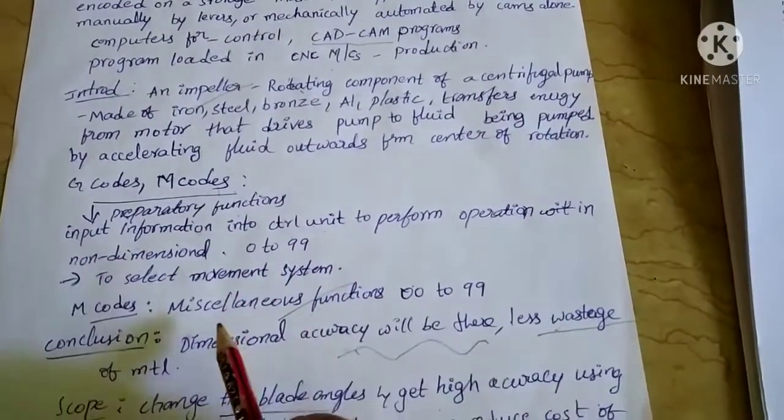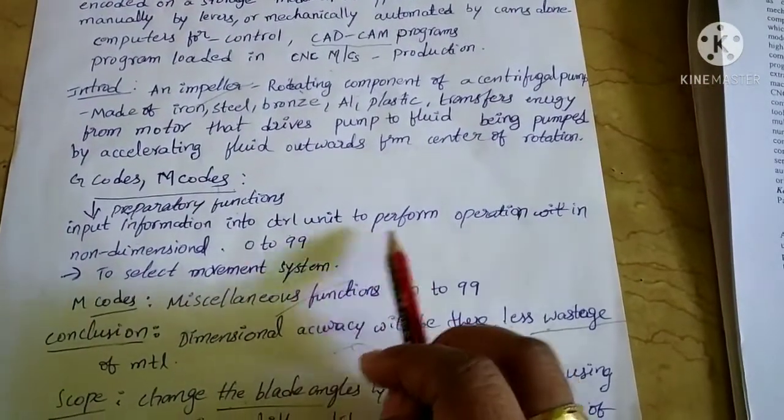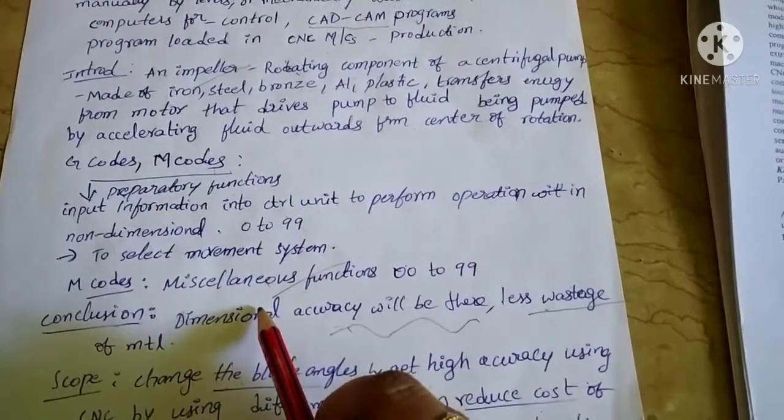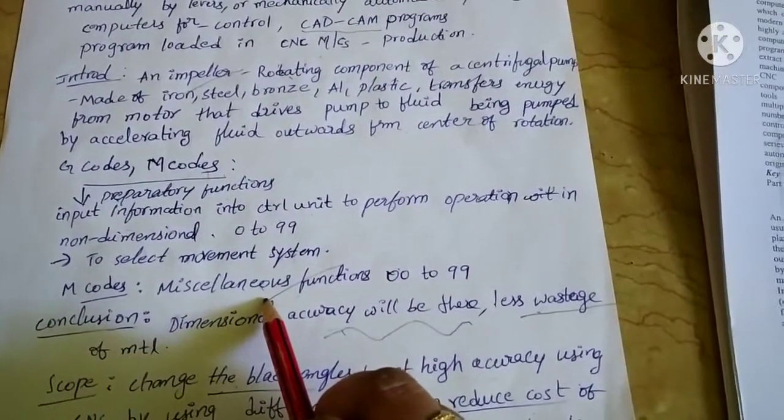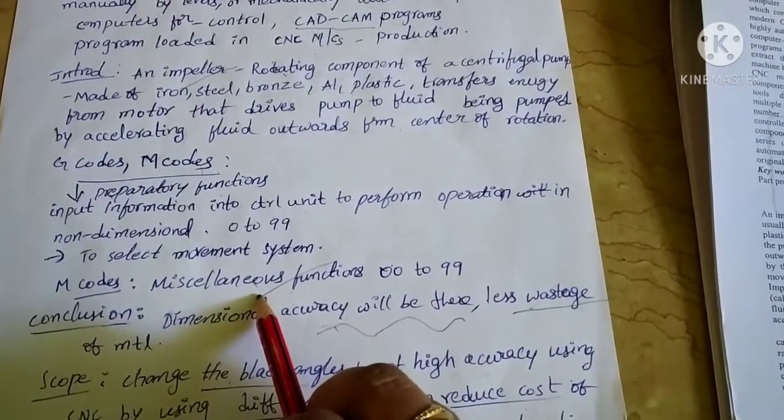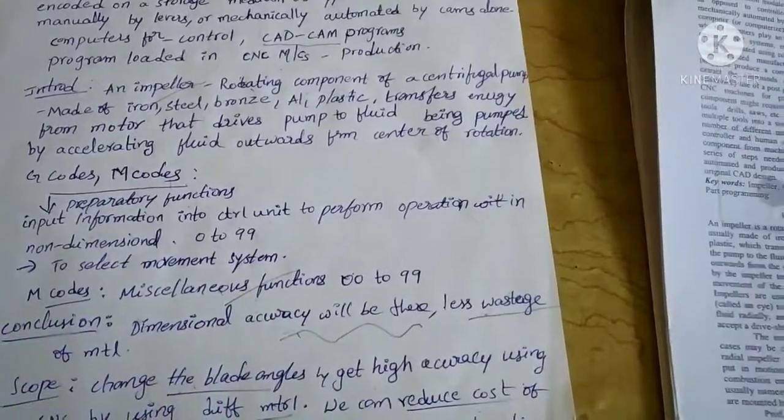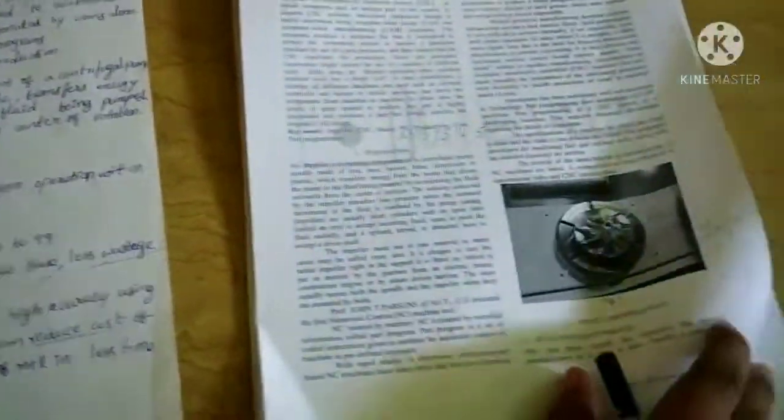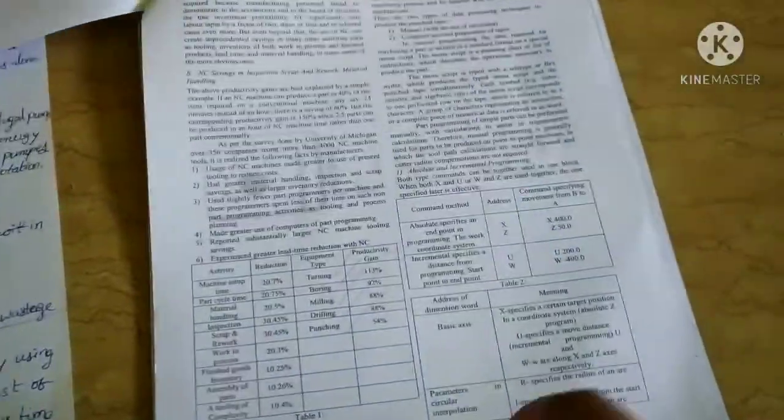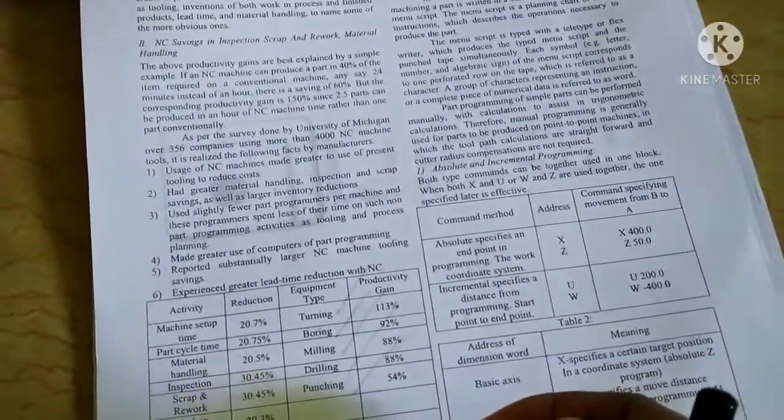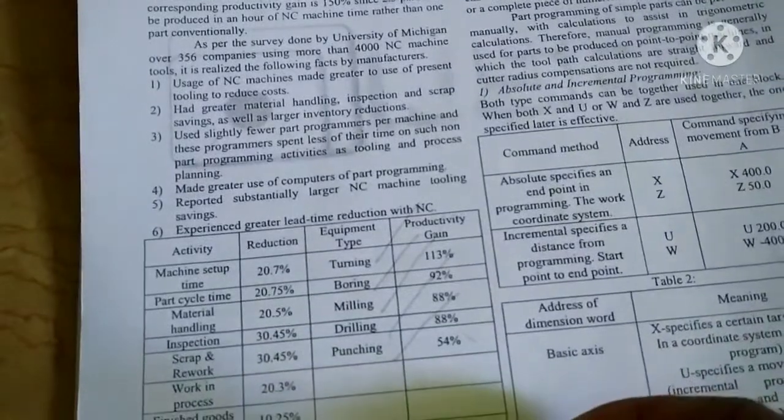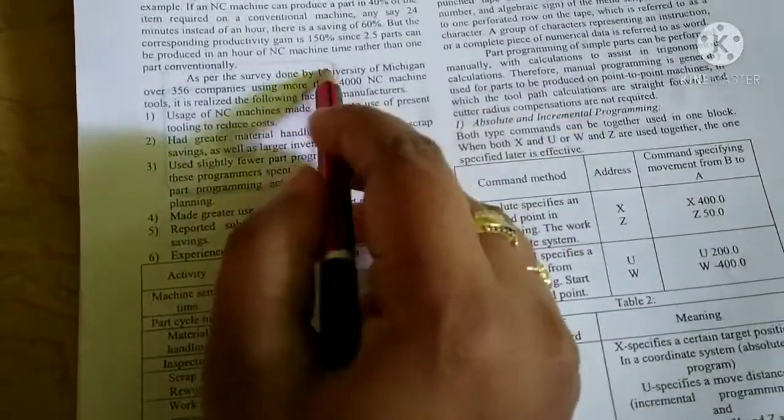With the help of G codes and M codes, we can write the program for impeller blades to manufacture. G codes are preparatory functions. We give input information to the control unit. G codes and M codes are from 0 to 99. These are the equipment types in the CNC machine.